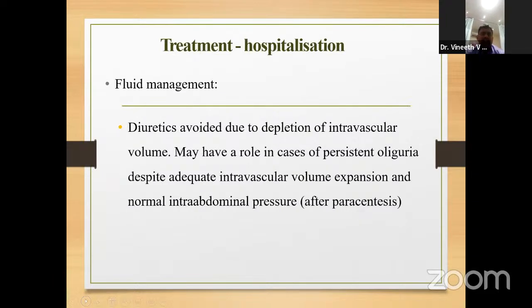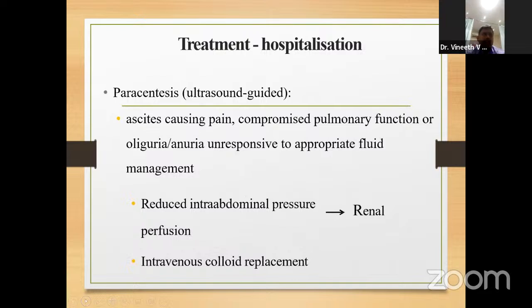Diuretics should generally be avoided due to depletion of intravascular volume, but have a role in persistent oliguria despite adequate intravascular volume expansion and normal abdominal pressure after paracentesis. Paracentesis should be performed when ascites is causing pain, compromised pulmonary function, or oliguria/anuria unresponsive to appropriate fluid management. Paracentesis reduces intra-abdominal pressure and increases renal perfusion.